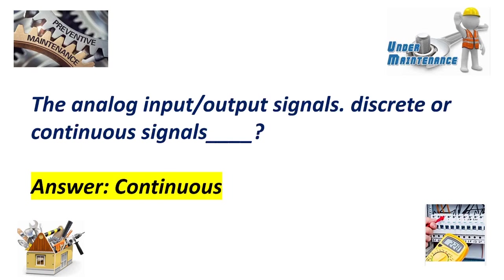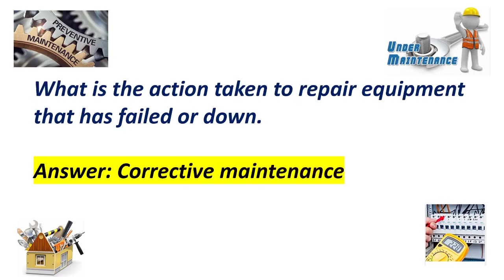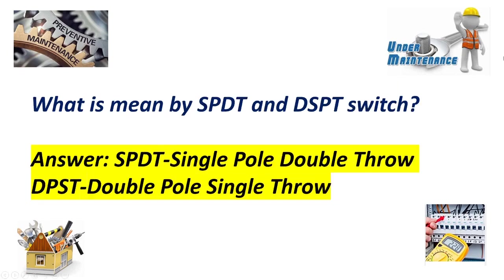Are analog input and output signals discrete or continuous signals? Answer: Continuous signal. What is the action taken to repair equipment that has failed or is down? Answer: Corrective maintenance. What is meant by SPDT and DPST switch? Answer: Single pole double throw; DPST stands for double pole single throw.